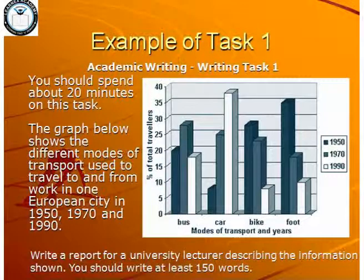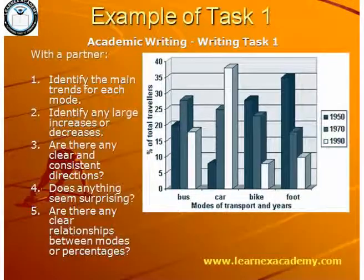Let's go ahead and look at an example of task one. You need to look at the chart, interpret it — what is it telling you, what do you see? Here the task is asking you to write a report for a university lecturer describing it. So you're going to be looking at descriptive words and using a lot of adjectives, because you're prompted to describe the information that's shown. We almost want to think about describing it as if the lecturer doesn't see the chart. Let's look at a few questions to help us brainstorm what we can write about here.